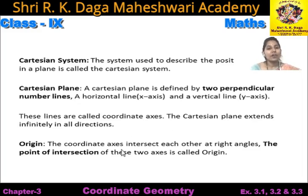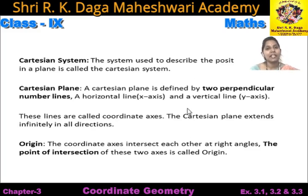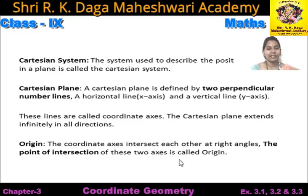Origin. The coordinate axis intersect each other at right angles. The point of intersection of these two axes is called origin. Jo number lines hoti hain, woh ek dusre ke perpendicular hoti hain, matlab ek dusre ke saath 90 degree ka angle banati hain. Ab 90 degree ka angle jahan yeh bana rahi hain, wahan yeh ek dusre ko intersect karti hain, aur jis point pe ek dusre ko intersect karti hain, wah point origin kehata hai.